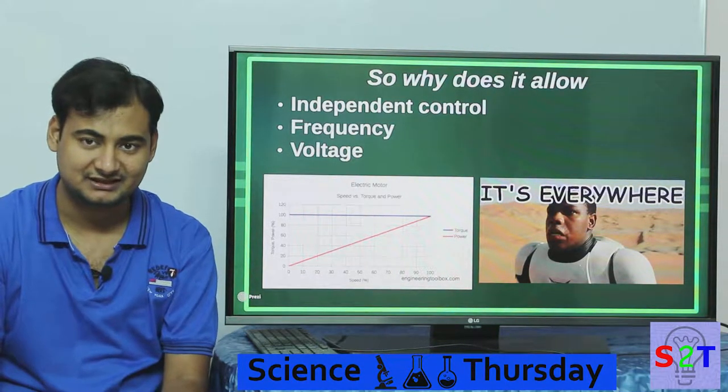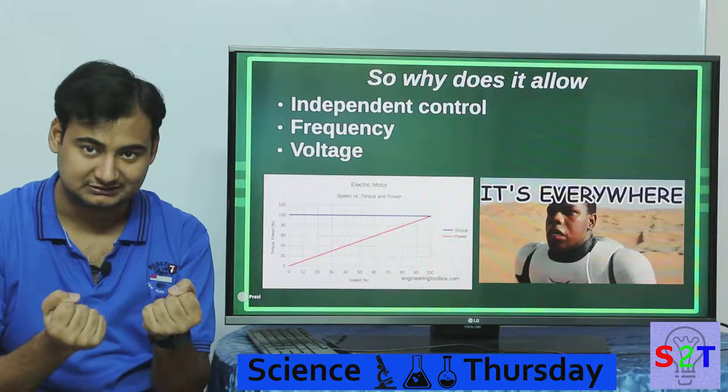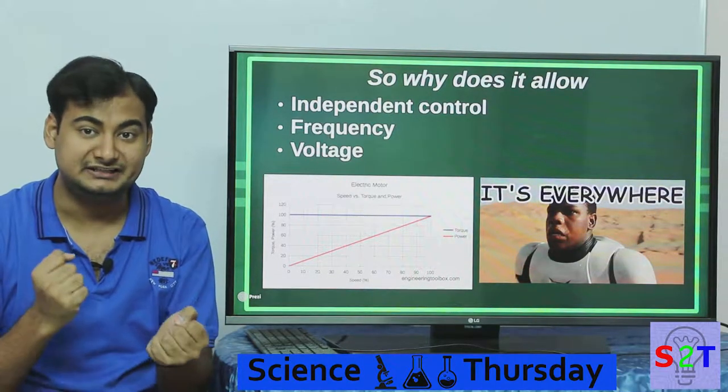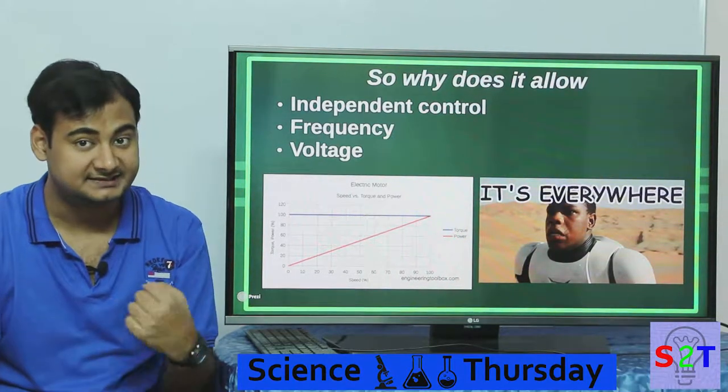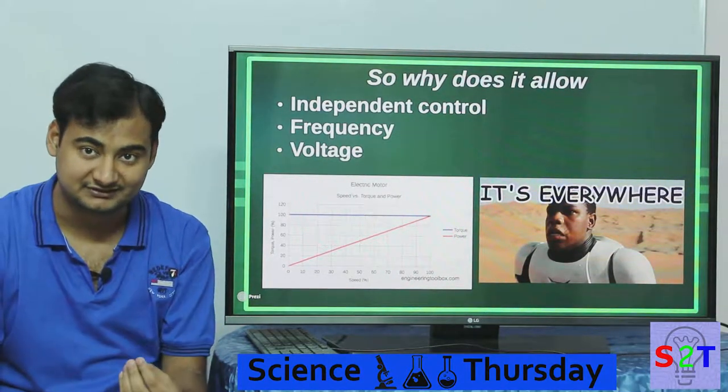Now here's the thing: anybody who's dealt with cars, locomotives, or anything, they must have known there are two simple factors - the speed and the torque. Now these two are independent. In an electrical motor, torque is directly proportional to the voltage, and the speed is directly proportional to the frequency.